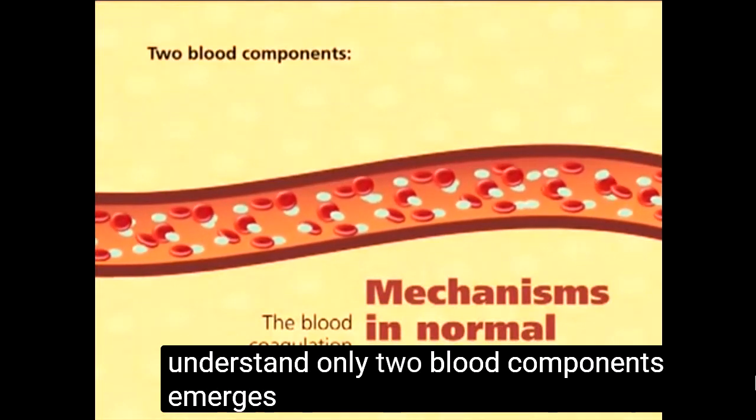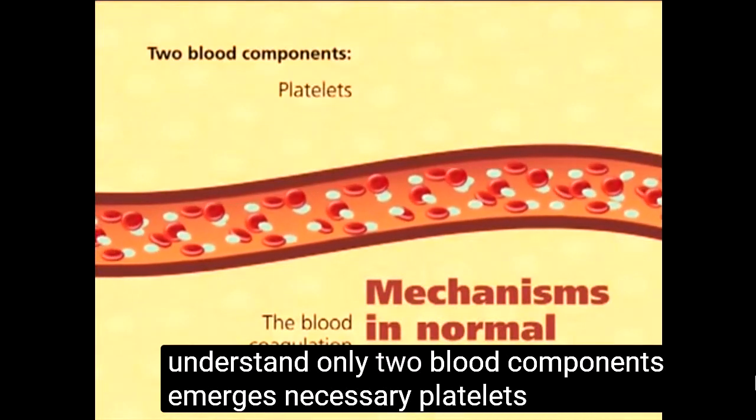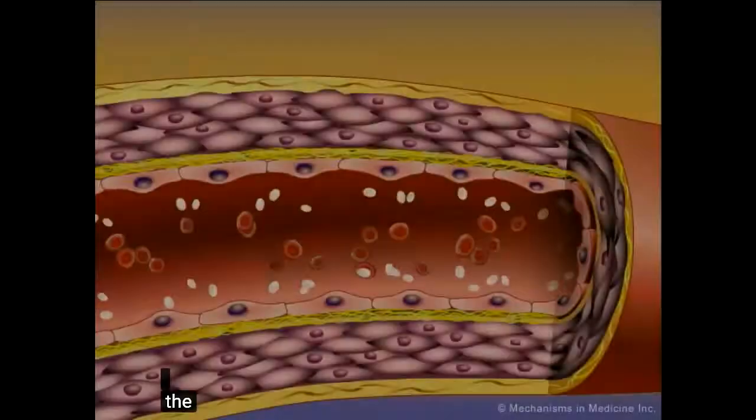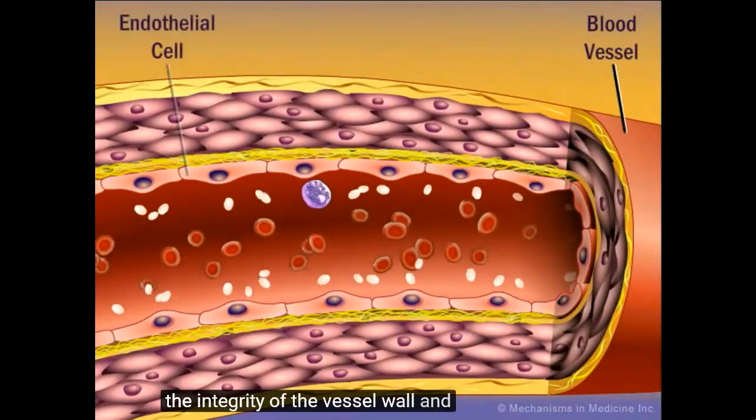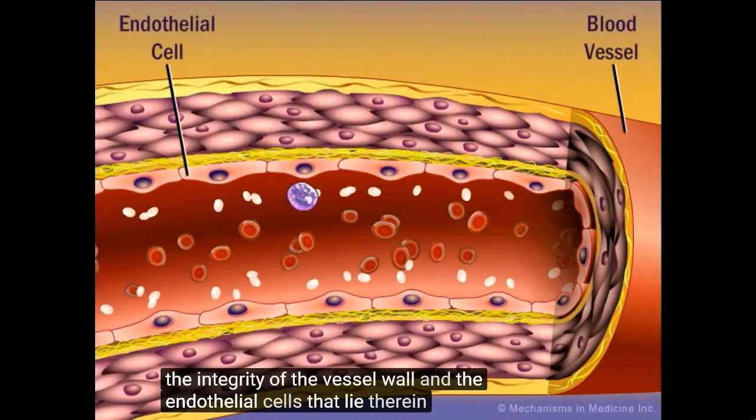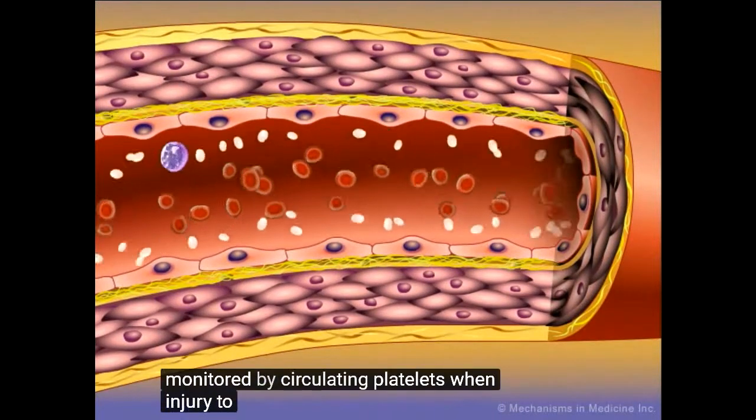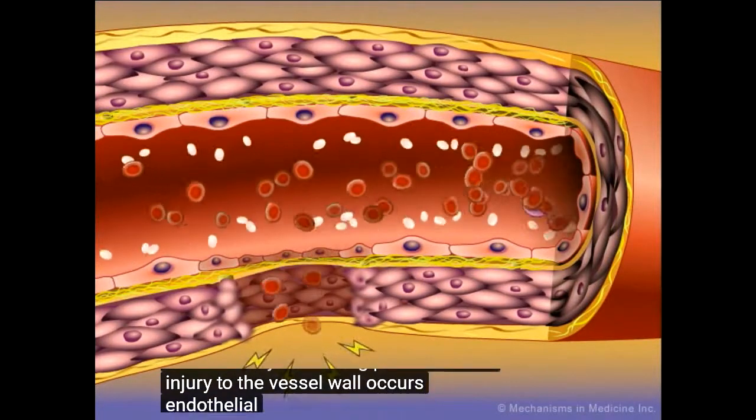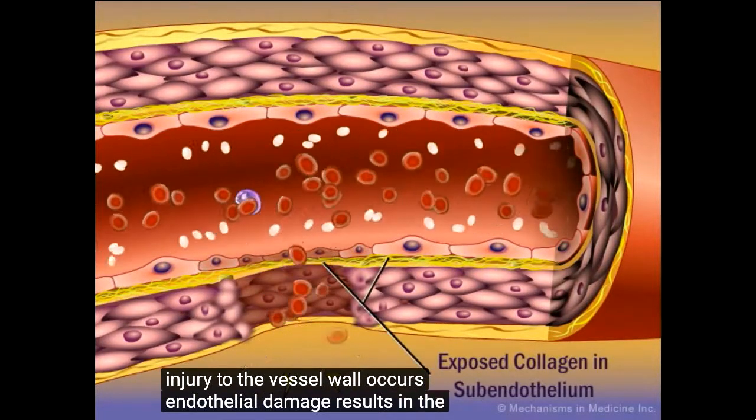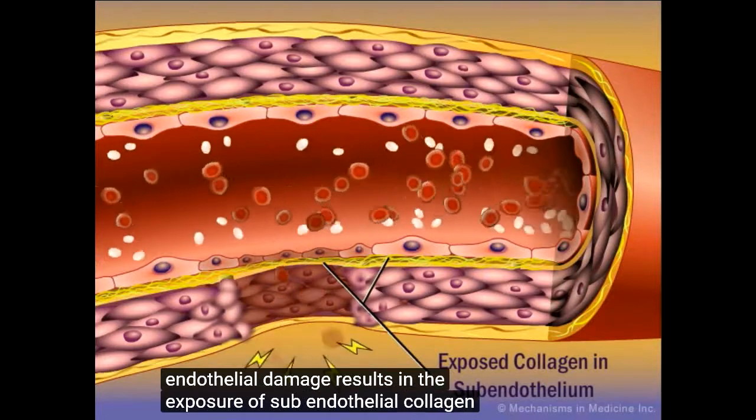Only two blood components emerge as necessary: platelets and fibrin. The integrity of the vessel wall and the endothelial cells that lie therein is monitored by circulating platelets. When injury to the vessel wall occurs, endothelial damage results in the exposure of subendothelial collagen fibers.